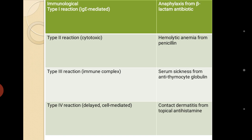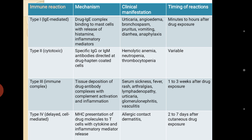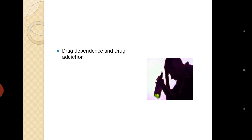Coming to immunological reactions, there are four types. Type 1 is mainly IgE antibody mediated. Type 2 is IgM or IgG antibody mediated. Type 3 is also IgM antibody mediated. Type 4 is T-cell and B-cell (cell-mediated) type. These are not that important in detail — just knowing the names is sufficient.